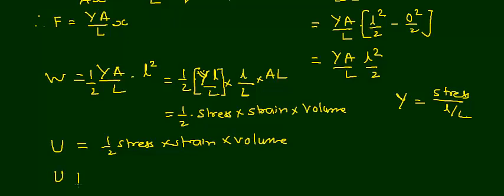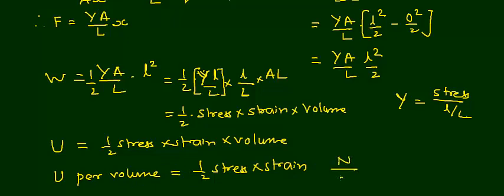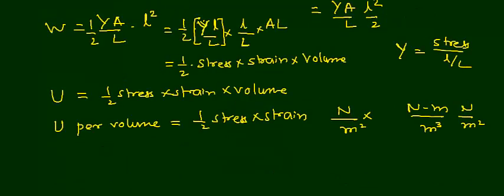If we want energy per unit volume of the wire, it is U/V = (1/2) · stress · strain. To confirm the units: stress has units of N/m², strain is dimensionless, so energy per volume is N/m² = N·m/m³ = J/m³, which is correct. Therefore, the elastic potential energy stored in a stretched wire is (1/2) · stress · strain · volume, and energy per unit volume is (1/2) · stress · strain.